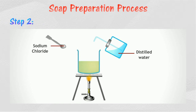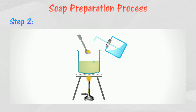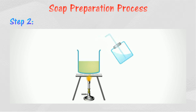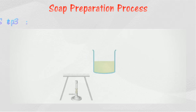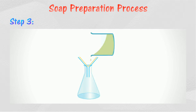Sodium chloride and water are added to the mixture. The mixture is boiled and then allowed to cool. The precipitate of soap forms and floats on the surface of the solution. Sodium chloride is added to lower the solubility of soap in water so that the soap is precipitated out. The soap that is produced is then filtered and purified.